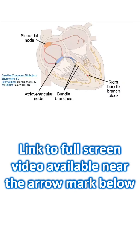Here is another simpler illustration showing the sinoatrial node, atrioventricular node, bundle branches, and depiction of the right bundle branch block here.